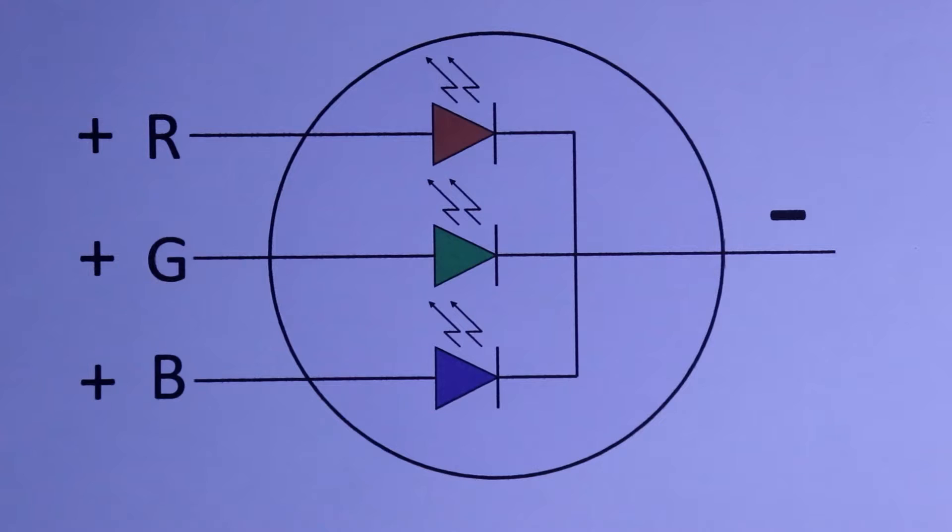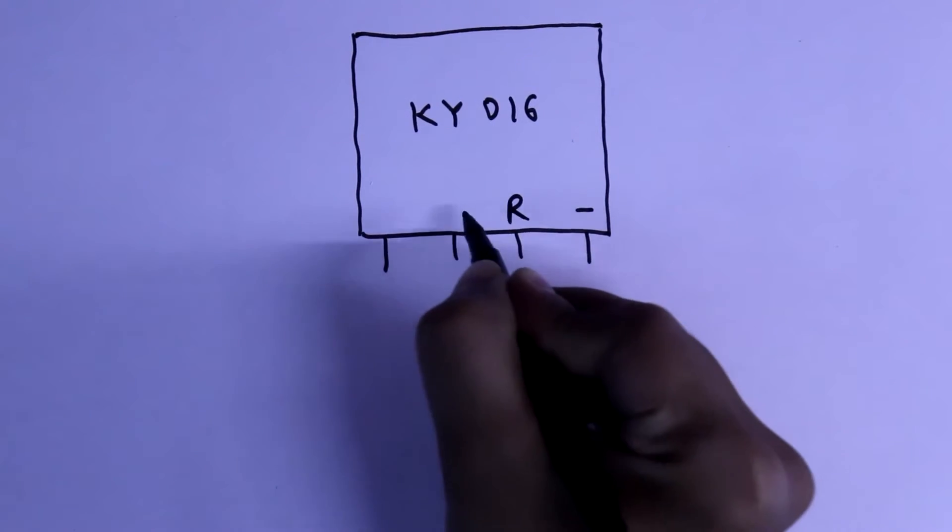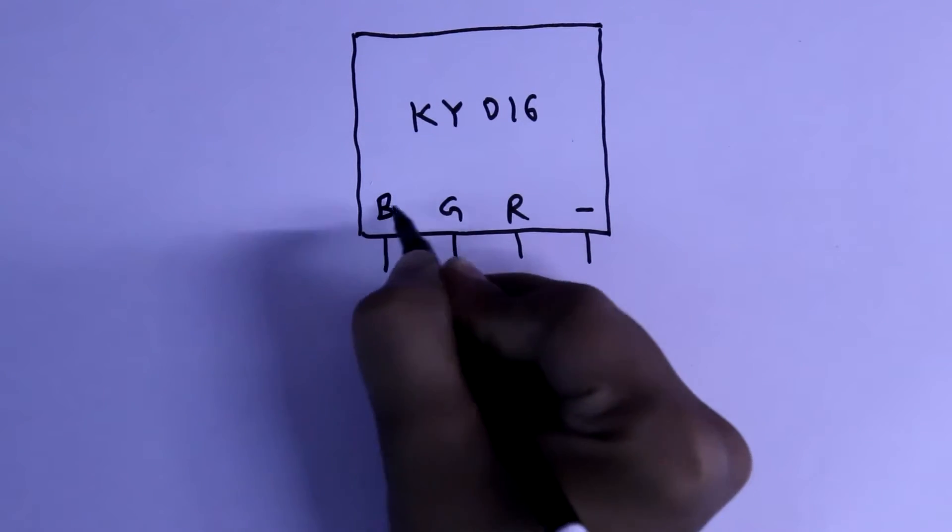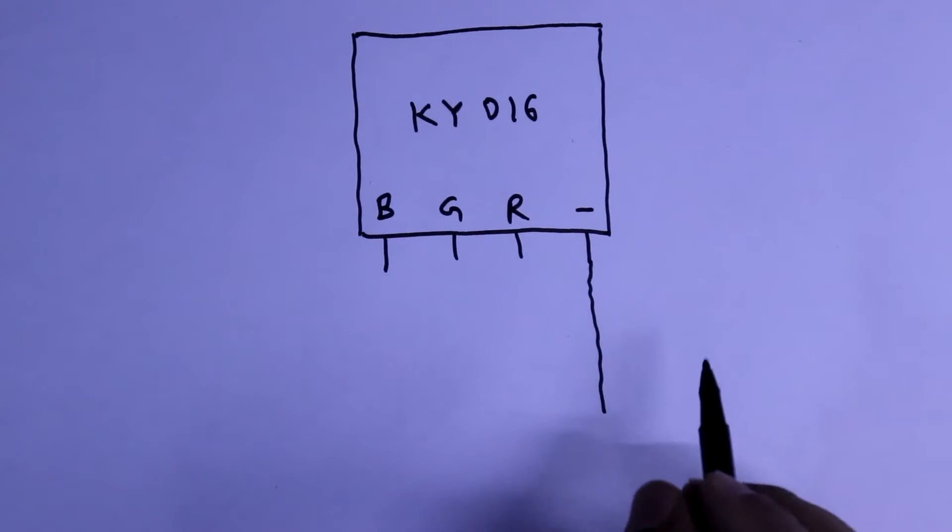Now we will do the practical with this LED. This is the module. Two negative, R, G and B. We will connect the negative directly to the ground.